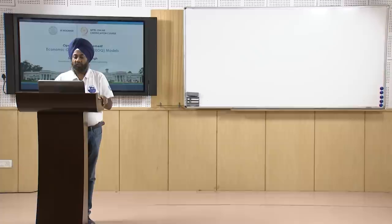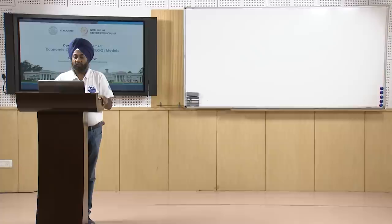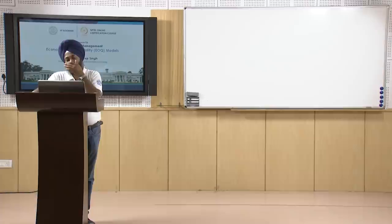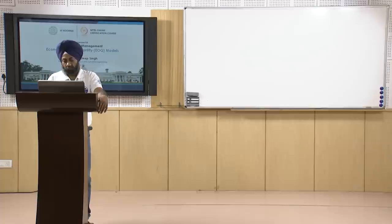In addition to this cycle, we also maintain a safety stock below the zero level. If there is any problem — for example, if the lead time is extended and replenishment is delayed — we draw from the safety stock. As soon as the order is received, inventory is replenished back to the order quantity level. This is the economic order quantity model, and based on this we find the order quantity that gives minimum total inventory management cost.